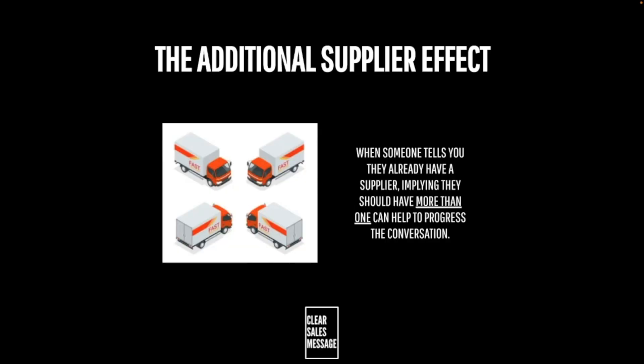How does it work? It works because it's essentially a dead-end question — we're asking a question we know the answer to. 'Who are your other two suppliers?' We know they don't have any. But by asking that question, we're implying they should. So we're asking who else they deal with, knowing they probably don't, and this changes the conversation from being stopped at 'we don't need you' to 'oh, maybe we should have more than one supplier.' That's the power of this — it helps you break through that objection.